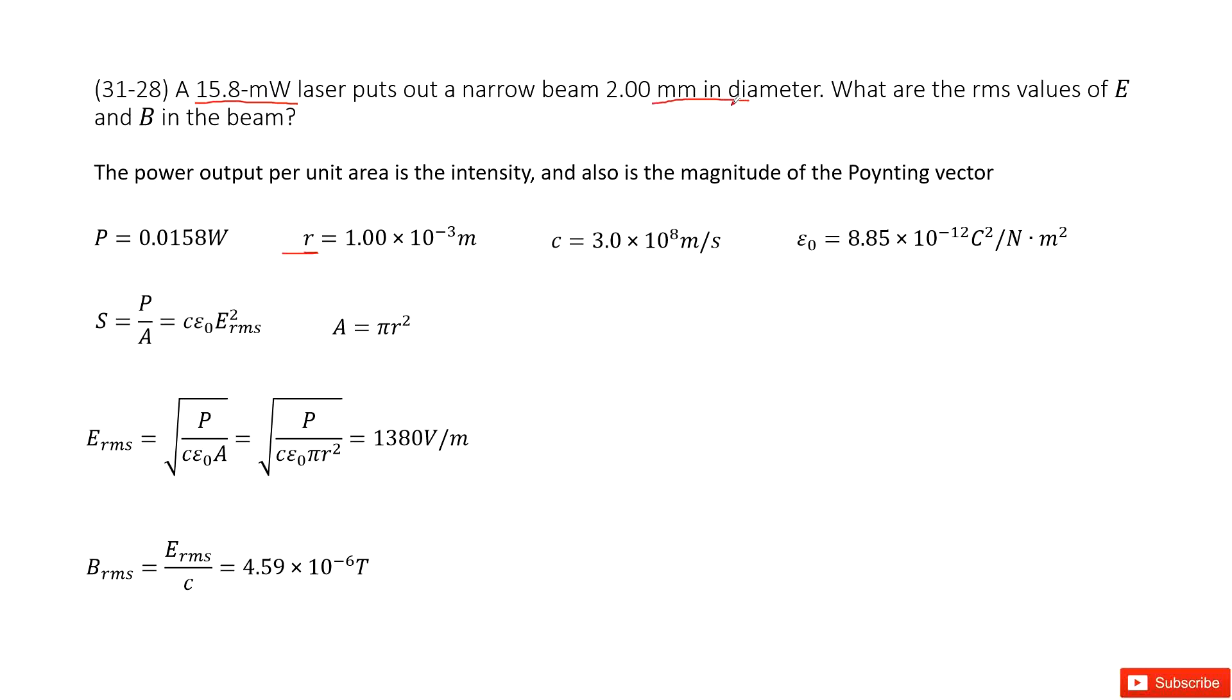So connecting this we can consider the Poynting vector because the power output per unit area is intensity and also the magnitude of the Poynting vector. So we can write the Poynting vector as the power divided by the A. This is called the area.